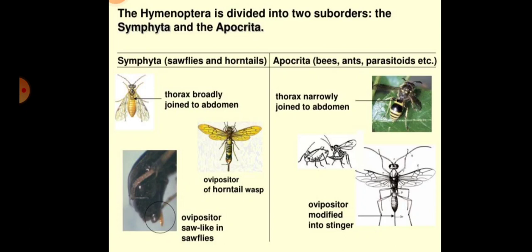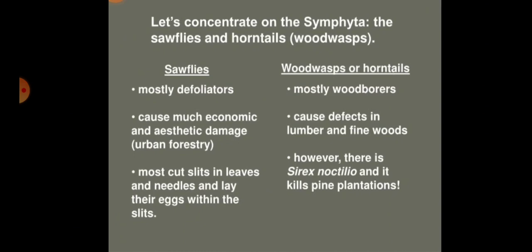The metanotum has a raised portion called the scutellum in Symphyta and is without it in Apocryta. The midgut is an open sac in all larval, pupal, and adult stages in Symphyta; in Apocryta it is a blind sac in larvae and opens into the hindgut just prior to pupation. Larvae of Symphyta are caterpillar-like with six pairs of prolegs, while larvae are apodous in Apocryta. Pre-pupa is absent in Symphyta and present in Apocryta.